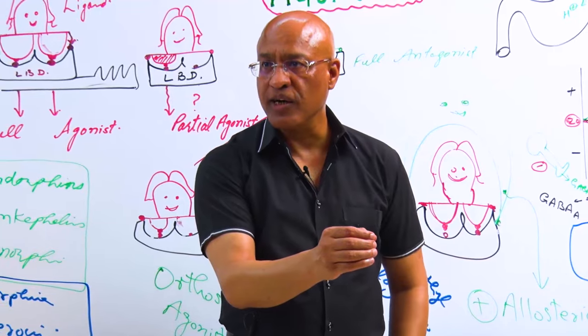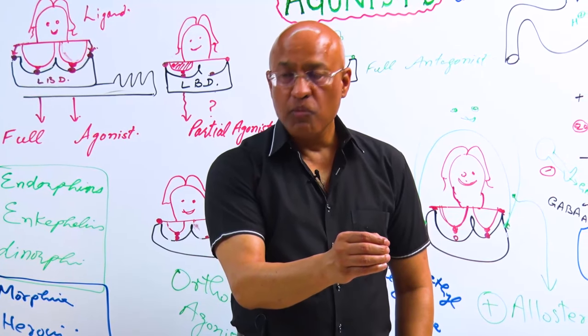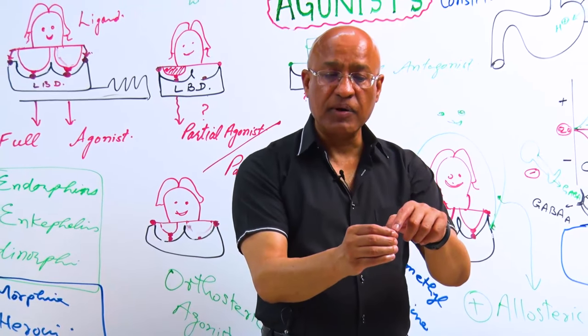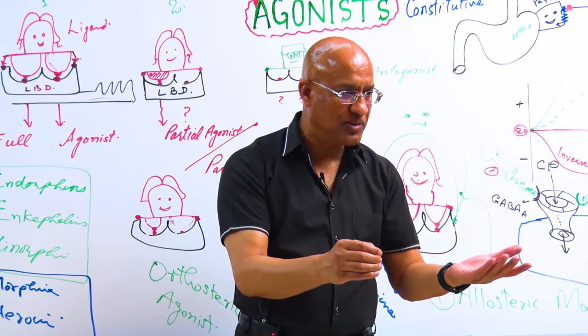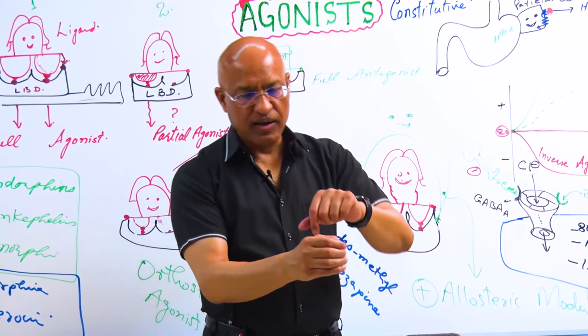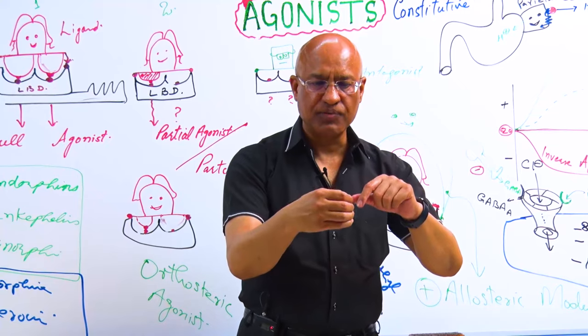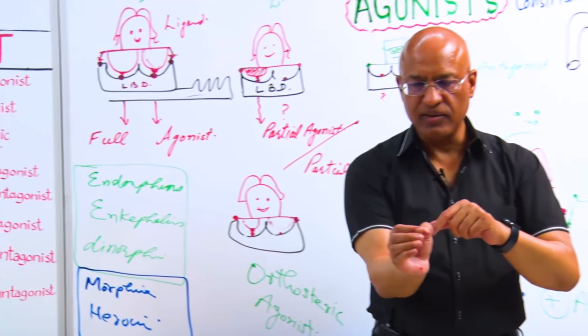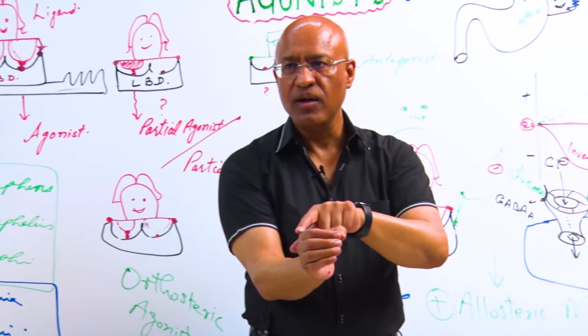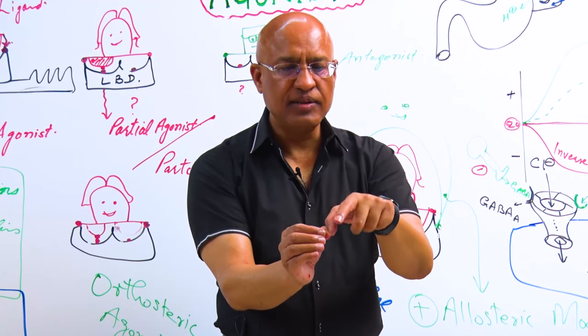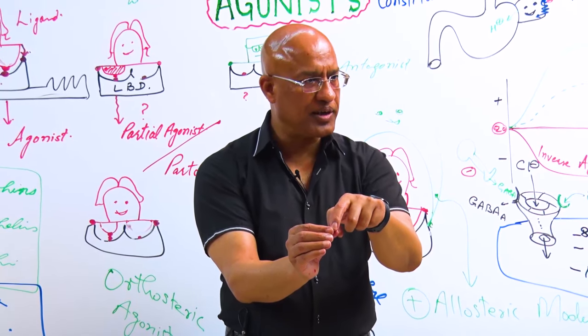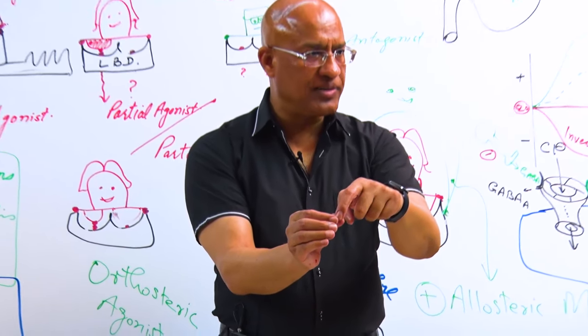Barbiturates also bind, but at a third space. Of course, that is an allosteric space. I'm making a little modification here. This was the site for GABA, this was the site for benzodiazepine, and this is the site for barbiturate. When barbiturate binds here...